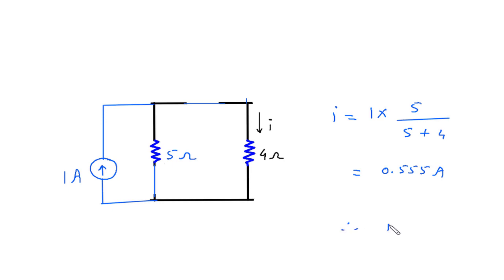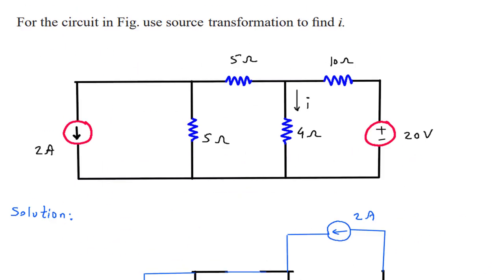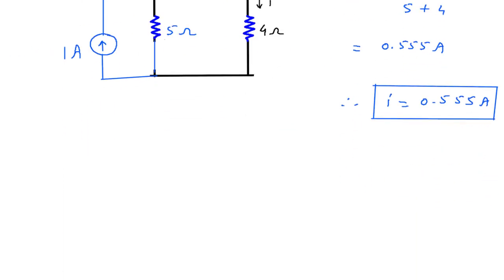Therefore, I is equal to 0.555 ampere. We had to find I using source transformation, and this is the value of I using source transformation.